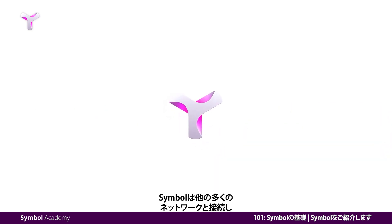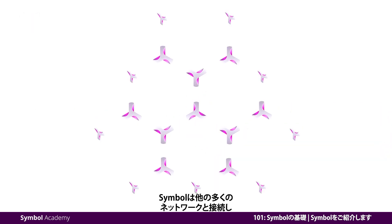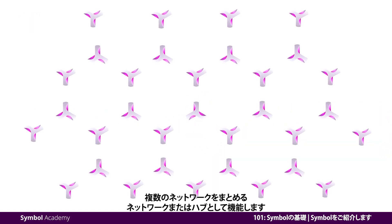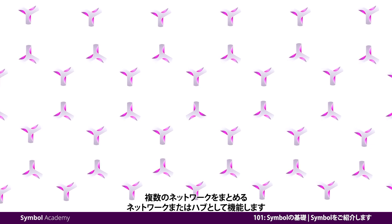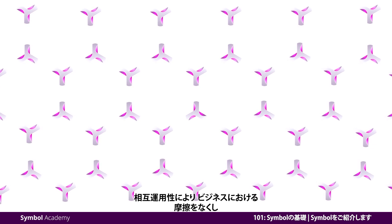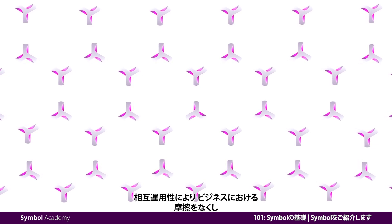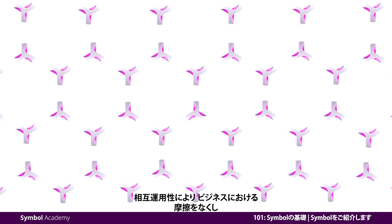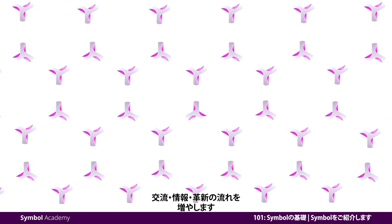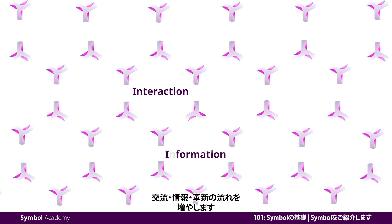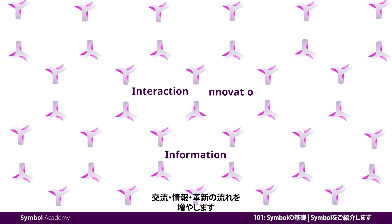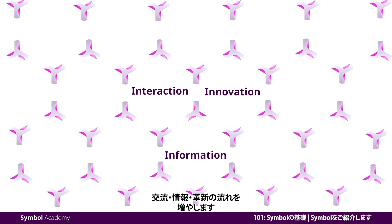Symbol is constructed to connect with many other networks and act as a hub, or a network of networks. Symbol's interoperability smooths business friction, increases the flow of interaction, information, and innovation.